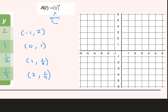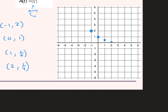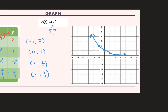So then to plot my first point, I go left to negative 1 and up 2. Next: stay at 0, up 1. Then right 1, up one half. And the last one: right 2 and up one fourth. So my graph looks like this — which is that decay shape because it's going down.